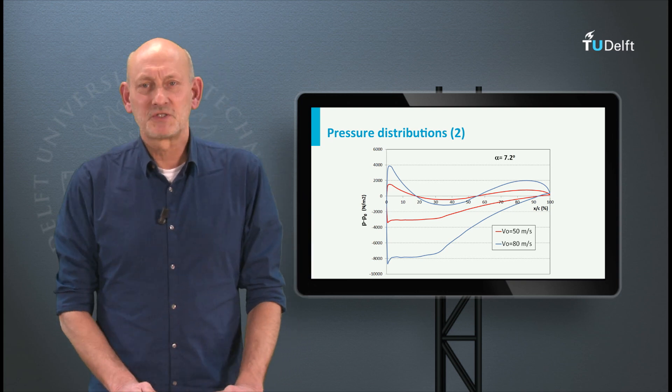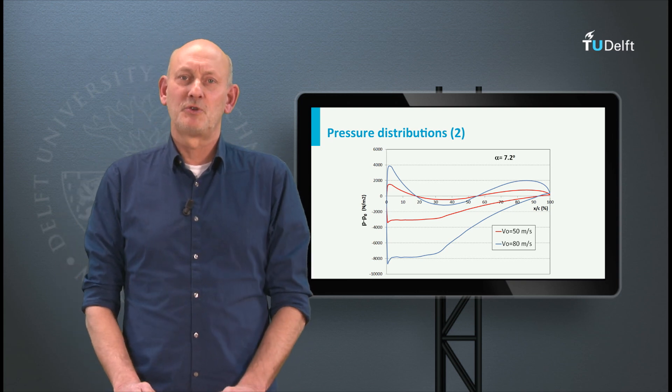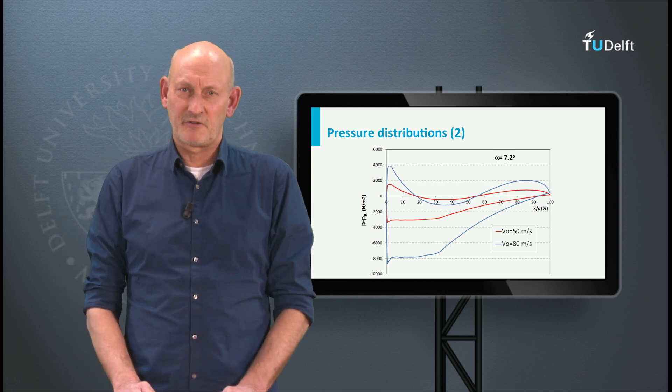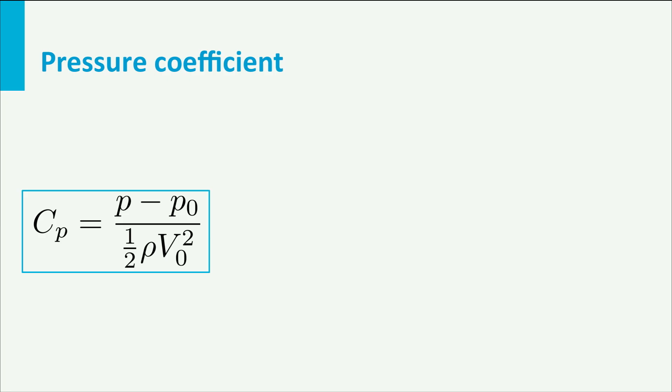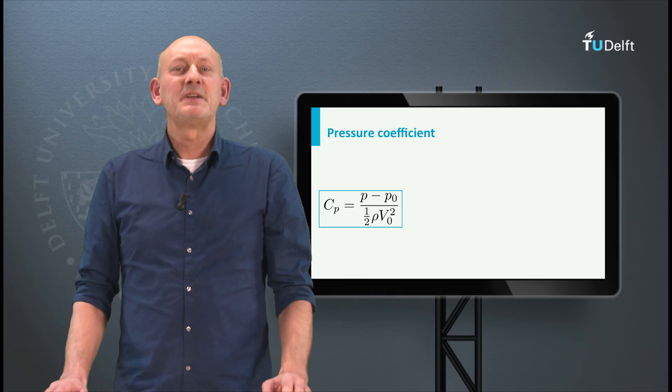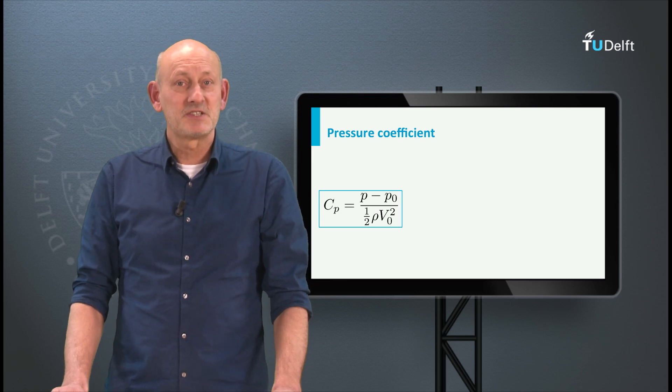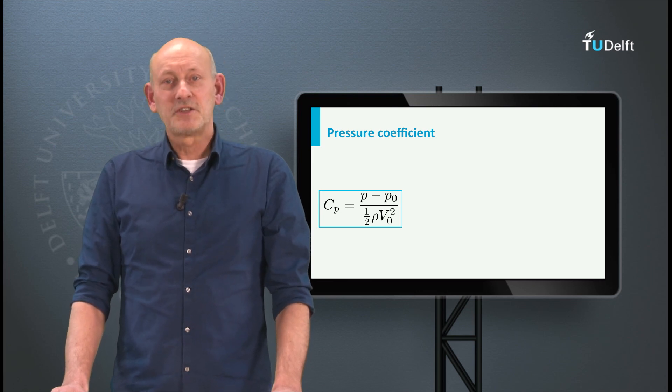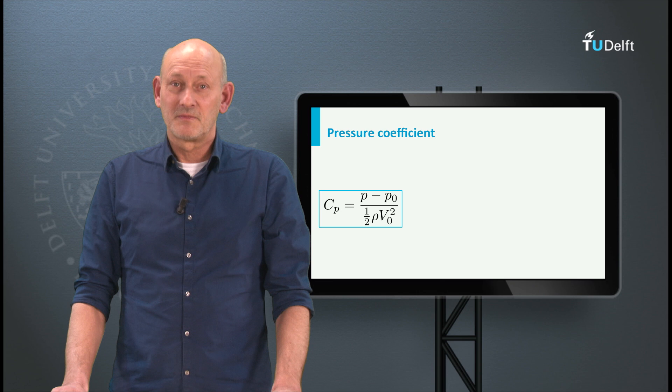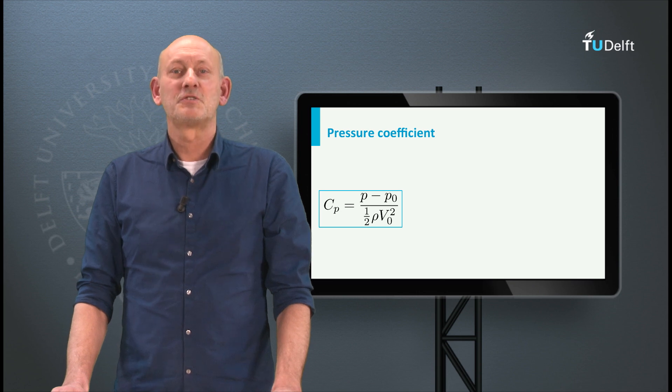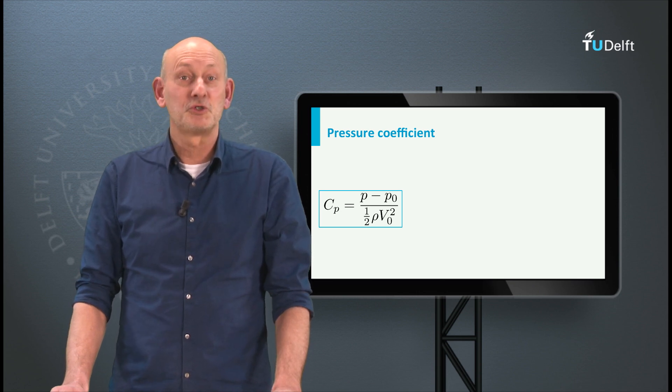If we vary the wind speed, we get all kinds of pressure distributions that look alike, but differ in pressure level. The non-dimensional pressure coefficient Cp is defined as p minus p0 divided by the free stream dynamic pressure half rho v0 squared. If we determine the Cp for the pressure distribution at the two speeds we just saw, then the two curves collapse into one, the Cp distribution for an angle of attack of 7.2 degrees.